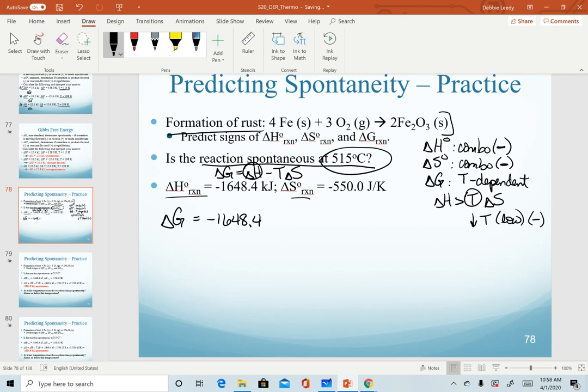So again, for our setup, we have our value of enthalpy minus our temperature, converting our Celsius into Kelvin by adding 273.15. There's our temperature conversion, multiplying that by our entropy value converted into kilojoules. So that is a negative value. Kilojoules per Kelvin.